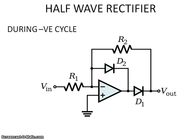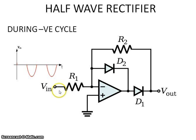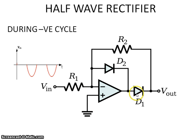In the second case, during the negative cycle, I am applying only negative cycle values to the same input terminal. Because of this, the zero potential at the positive terminal is greater, so the output becomes plus V-sat. As a result, D2 is off and D1 is on.